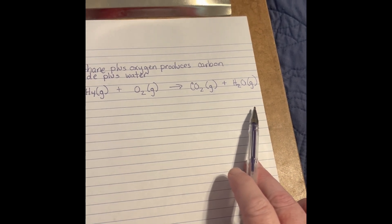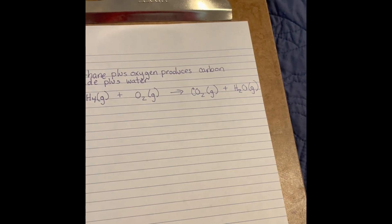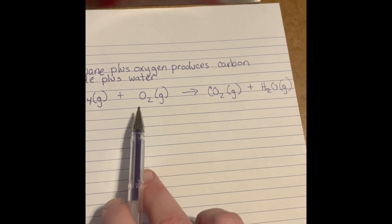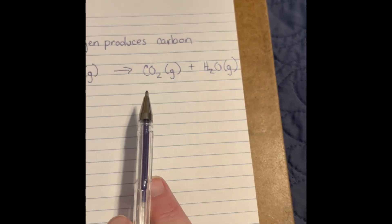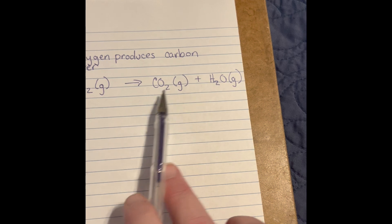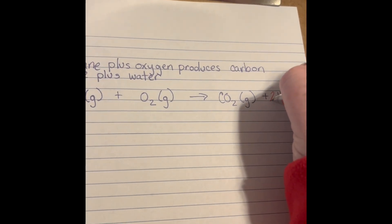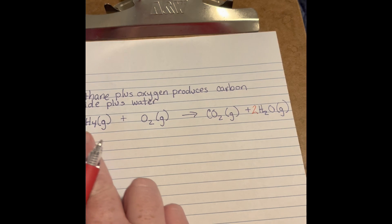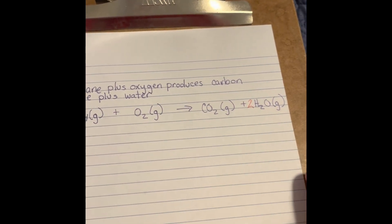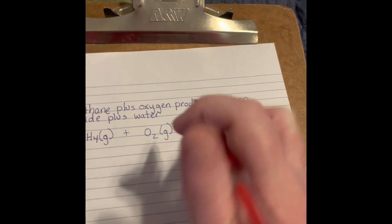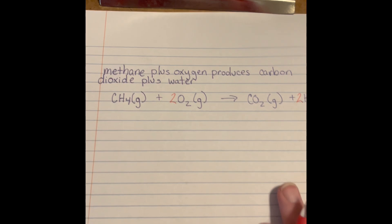On this side of the equation I have one carbon, four hydrogen, and two oxygen. Over here on this side I have one carbon, three oxygen, and two hydrogen. The first thing I'm going to do is put a 2 here in front of water, and that's going to give me four hydrogens, which is what I have on the reactant side. I still only have one carbon, so that balances. With my oxygen, I have two here, and since I have two molecules of water I have two here, making four. So I need to put a 2 in front of oxygen.